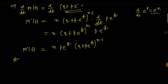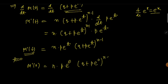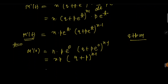To find the mean, we simply put t = 0 in this derivative. So we get M'(0) = n·p·e^0·(q + p·e^0)^(n−1), which gives n·p·(q + p)^(n−1). Since q + p = 1 for the binomial distribution, this simplifies to np. This is our mean.